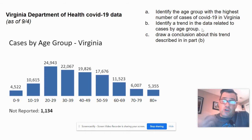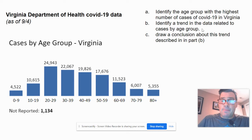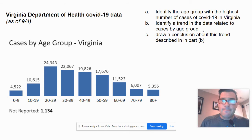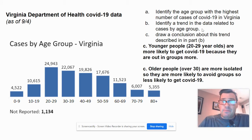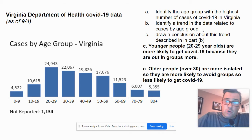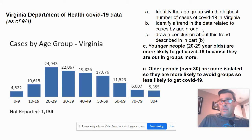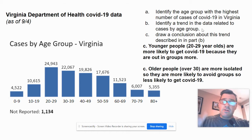Draw a conclusion about the trend described in part B. This conclusion doesn't necessarily have to be proven true, but it needs to be reasonable given the data. For example: 20 to 29 year olds are more likely to get COVID because they're out in groups more — they're socially active. Older people over 30 are more isolated, live at home with children, and are more likely to avoid groups, so they're less likely to get COVID. Either of those would be valid conclusions based on the data.